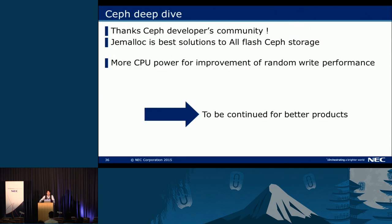In conclusion, we need more CPU power for improving random write performance. These trials are part of our R&D activities. We are trying to evaluate OSS and combinations of OSS for achieving better products.